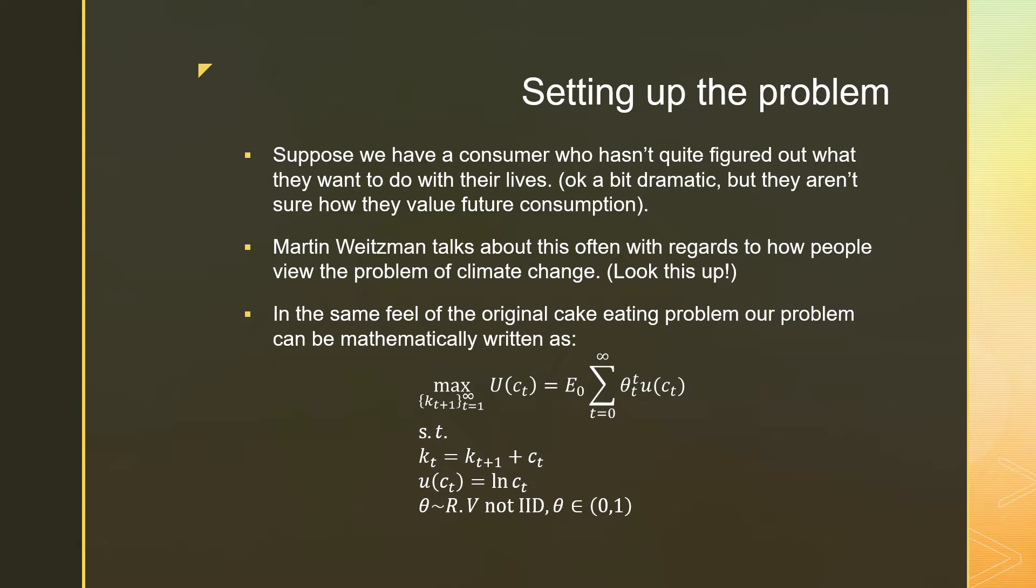In the same vein of the original cake eating problem, our problem here can be mathematically written as the following. This is an expected value problem where we have theta instead of beta to the power of t. And theta over here is a random variable that is not IID. So there's some process that's going on. The reason why it's not IID is because if it was, then we have this just go to zero and that wouldn't be a very interesting problem.